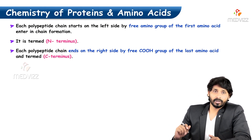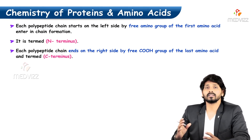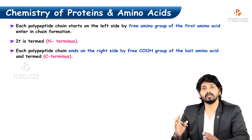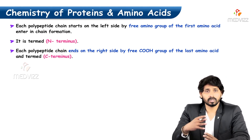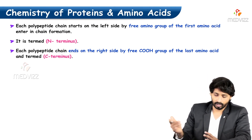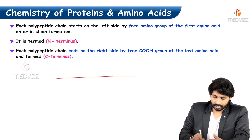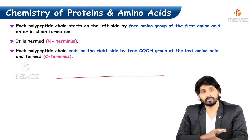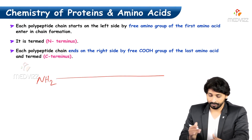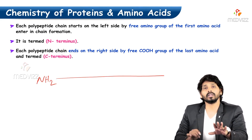Continuing the discussion on peptide chain formation — how amino acids form peptides and how peptides form proteins. Each polypeptide starts from the left side with a free amino terminal, meaning the amino group on the left side is free. This is known as the N-terminal or amino terminal — the beginning amino acid's amino group is free.